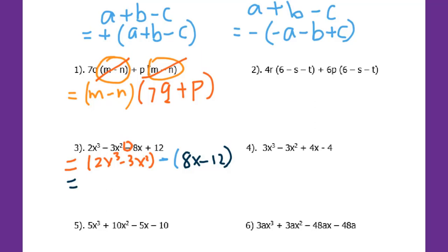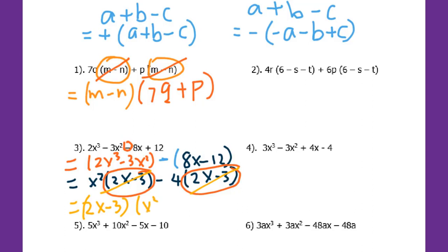Then I will find the GCF for each. I got x². 2x minus 3. For the second group, the GCF of 8 and 12 is 4. I get 2x minus 3 again. So you can see 2x minus 3 is the common factor. I take both outside: 2x minus 3. When I take this outside, this is gone, this is gone. What's left is x² minus 4.